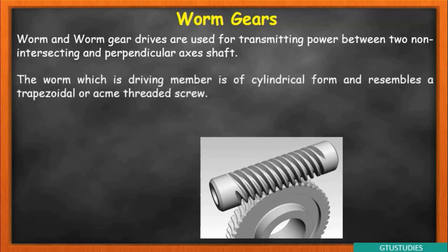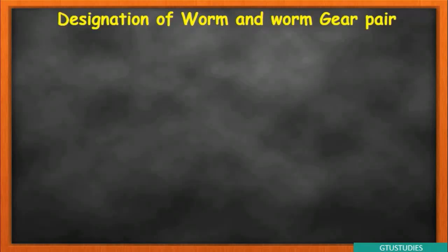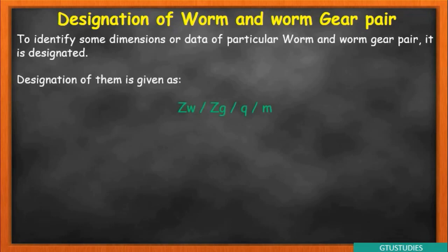Observe the worm gear — its teeth are always in helix form, so it is like a helical gear. When designing, you can also use helical gear terminology. Now we move to the designation — how worm and worm gear pairs are designated. Just like any mechanical component, we give a symbolic representation so that all instructions can be read from that symbol. This is called designation.